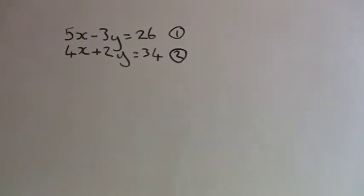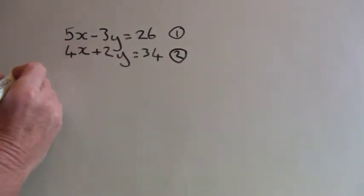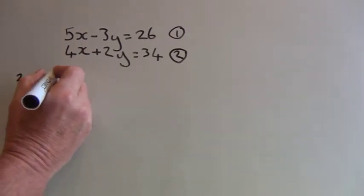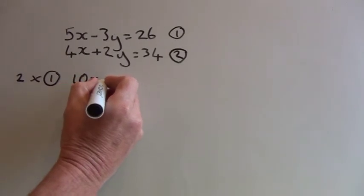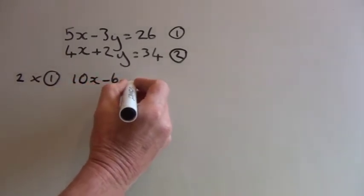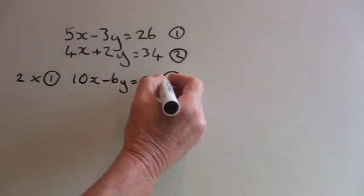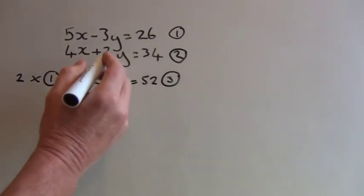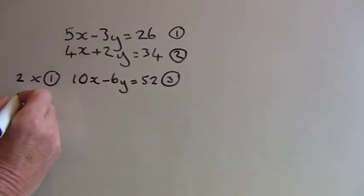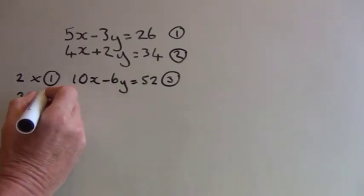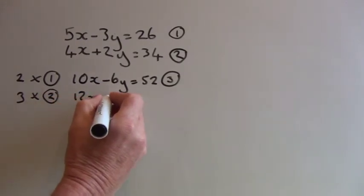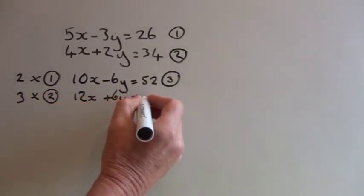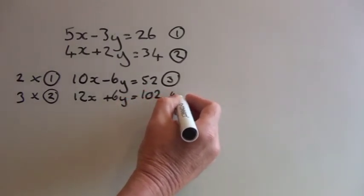Now suppose we're going to choose to eliminate the y terms in both equations. We need to make these the same by multiplying equation 1 by 2 and equation 2 by 3. So 2 times equation 1 gives 10x minus 6y equals 52, and we'll label that as equation 3. Now 3 times equation 2 gives us 12x plus 6y equals 102, and we'll call that equation 4.